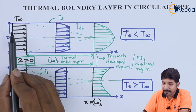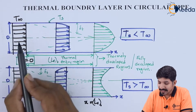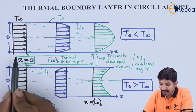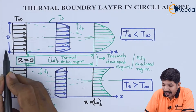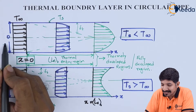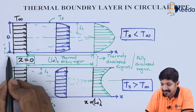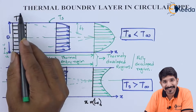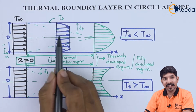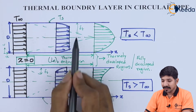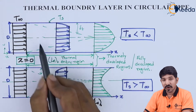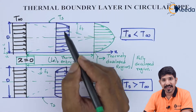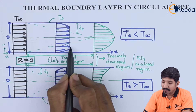Let us consider a pipe of diameter D. Before the entry of the pipe, the velocity profile will look something like this. As we go in the r direction — where r is radial and x is axial — the value of temperature does not change. As we go inside, the entry-level region begins, and that region is not fully developed.